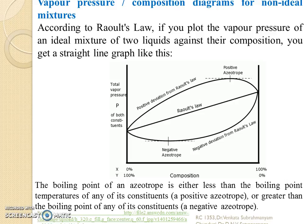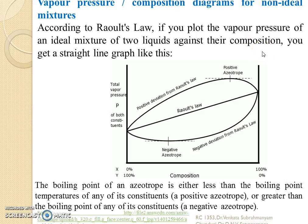If it is an ideal system, according to Raoult's law, if you plot the vapor pressure of an ideal mixture of two liquids against their composition, you will get a straight line. That type of liquids are called ideal systems. If any mixture is deviating from this straight line position, or it is not showing the straight line, then we call it a non-ideal system.